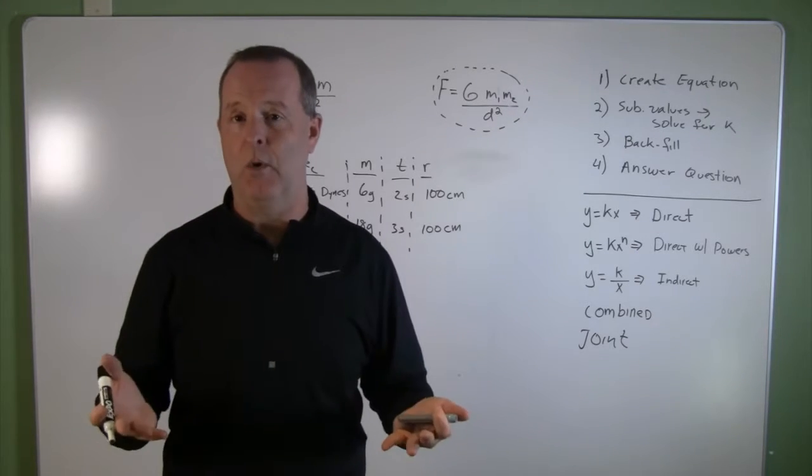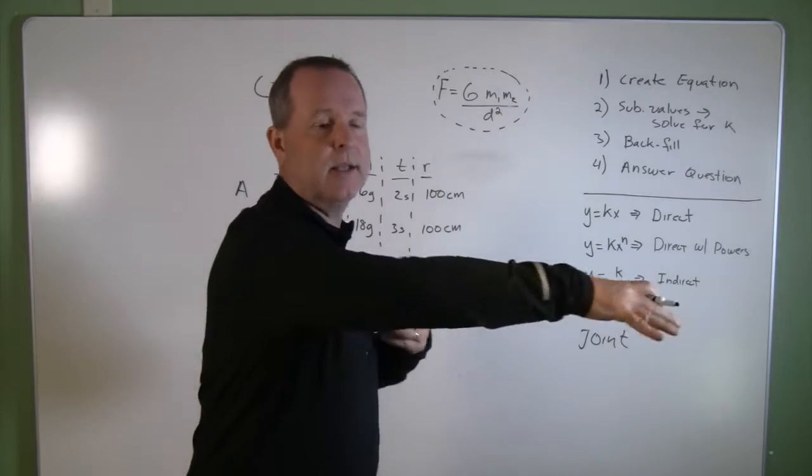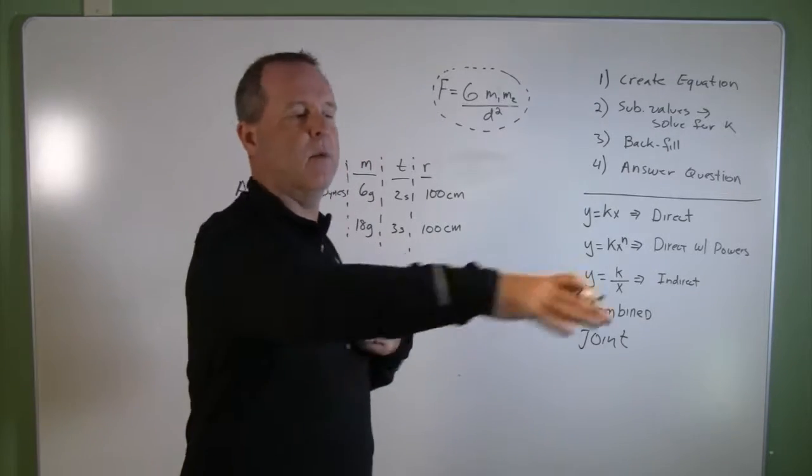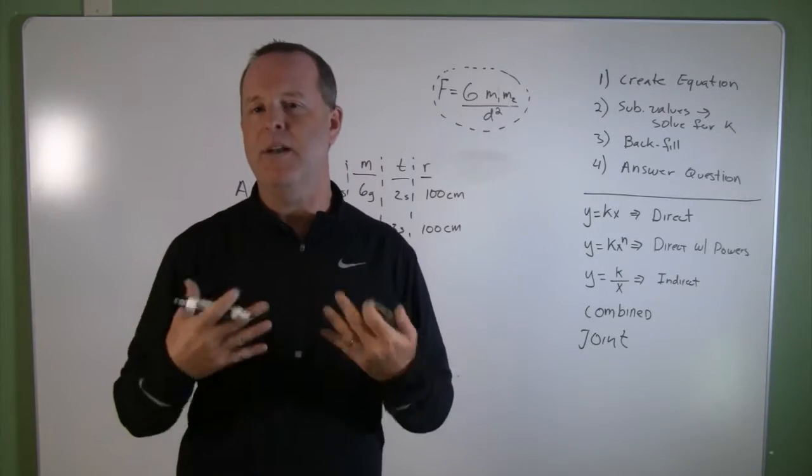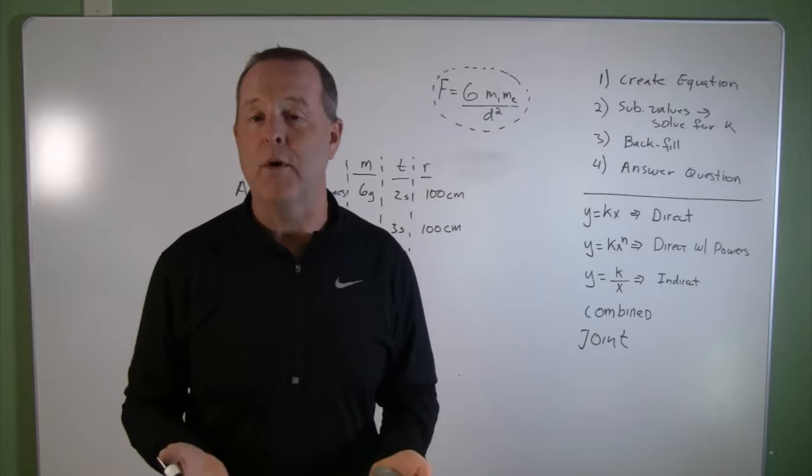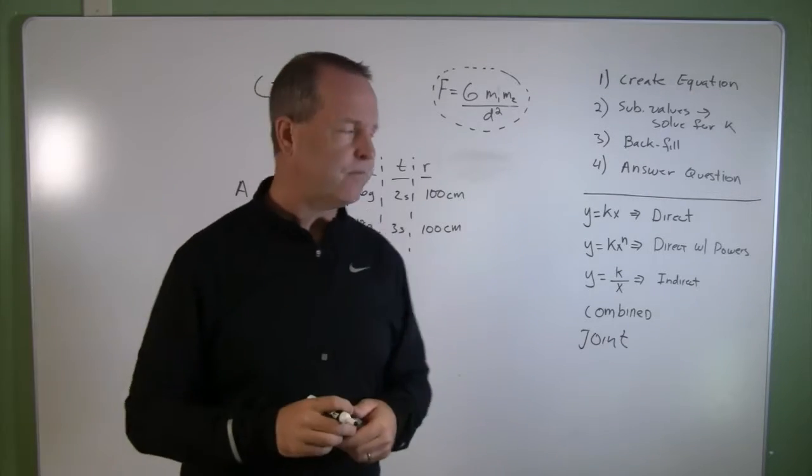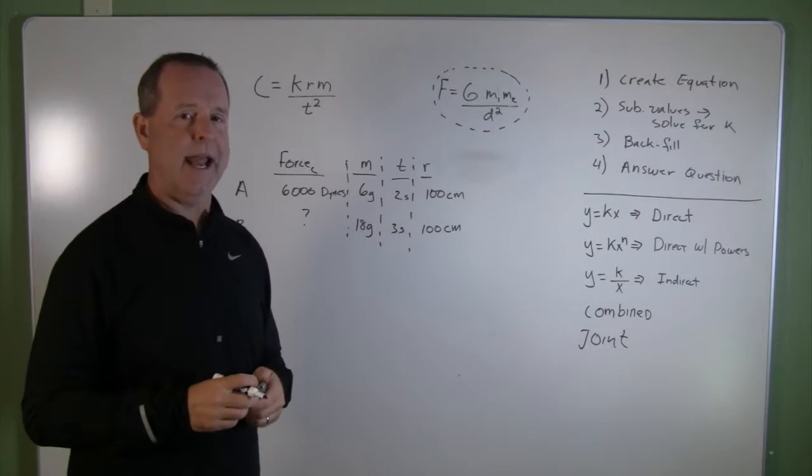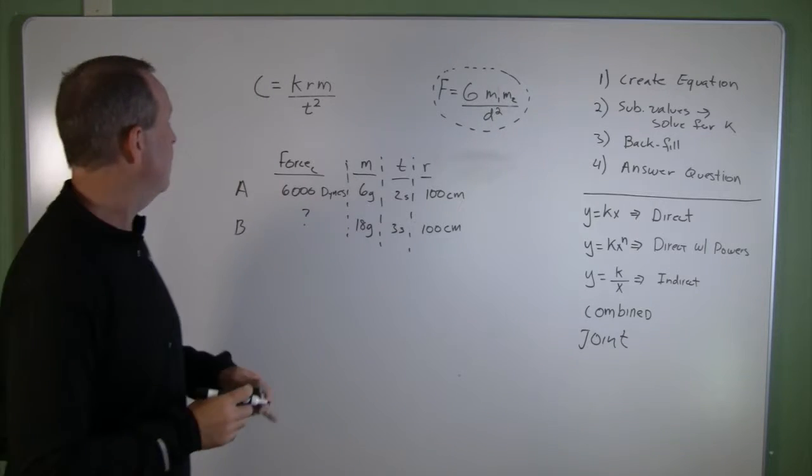Maybe a discus thrower who takes his disc and is rotating it, revolving it around his body. And we want to figure out what might the force be at its release. So we can get a sense of what happens. So let's look at this initial model that we have.